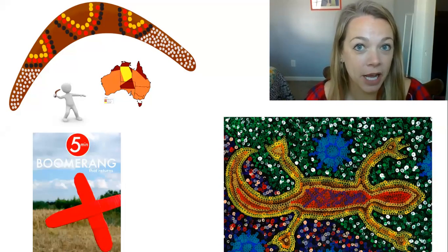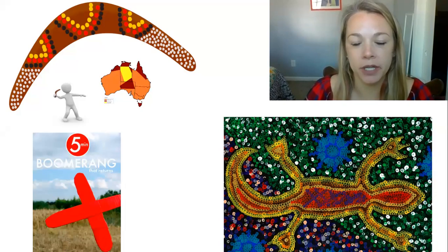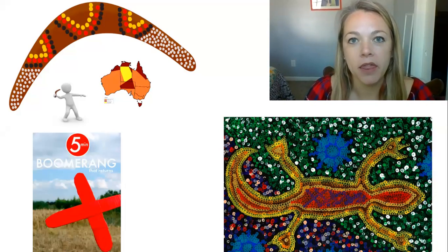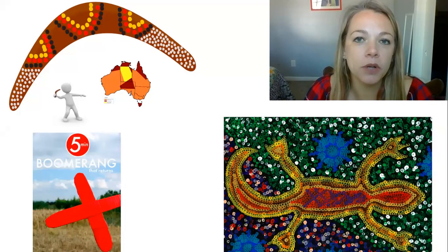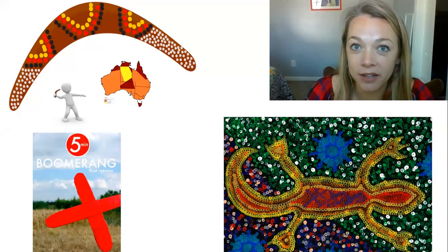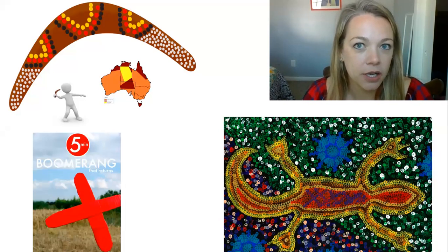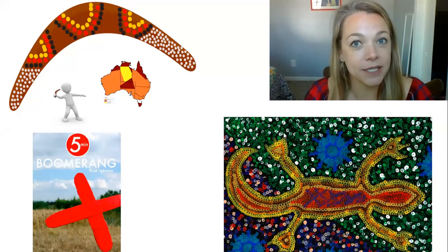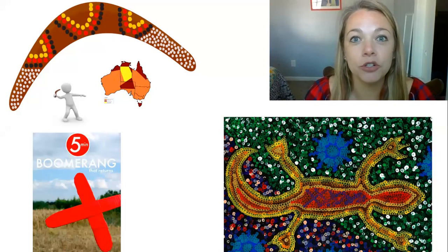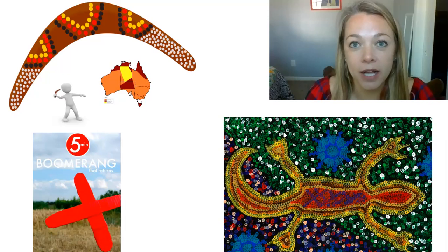You could either make a boomerang or draw a dream animal inspired by the Australian Aborigines, the people who were native to Australia. They believed that animals will come to you in dreams. You can draw an animal that maybe you would want for your dream pet, and if you want, you could cover that picture or painting in dots — for example, take Q-tips and dip them in paint and cover your dream animal in dots like the Australian Aborigines did.